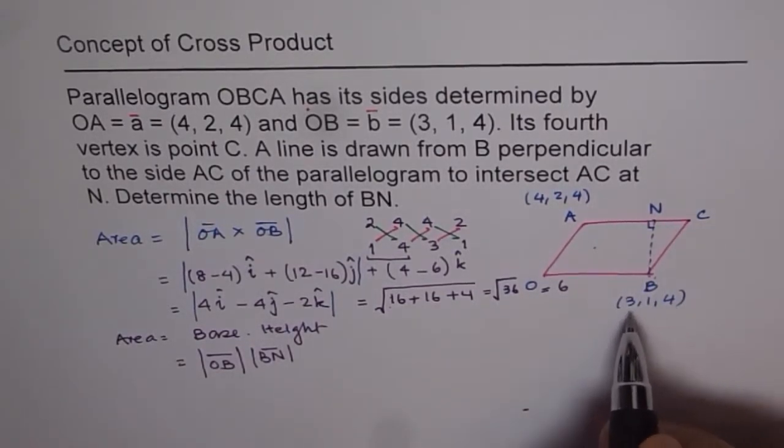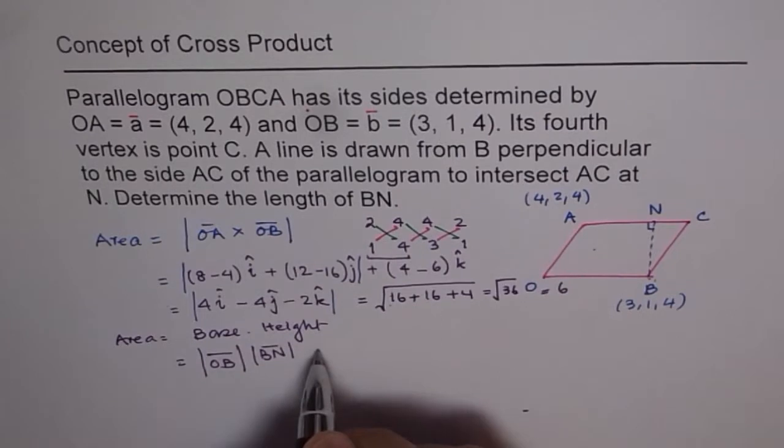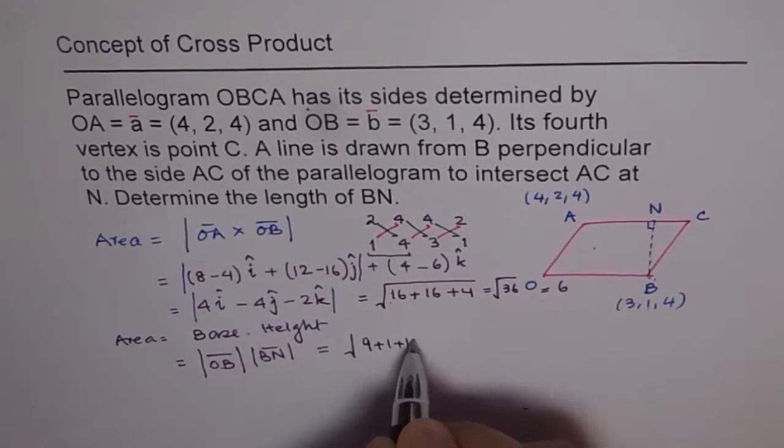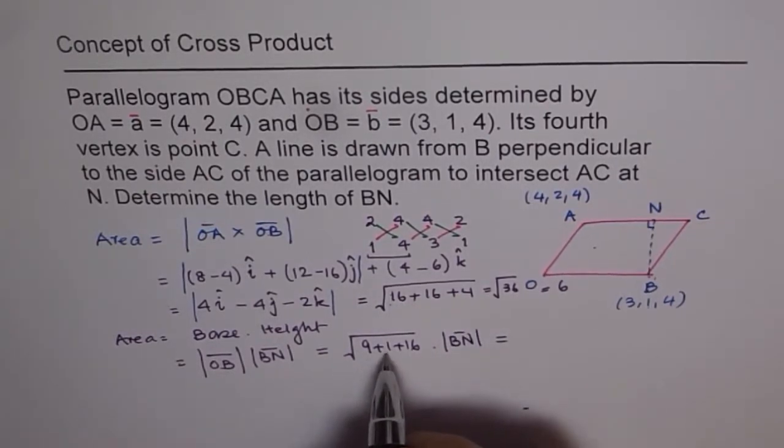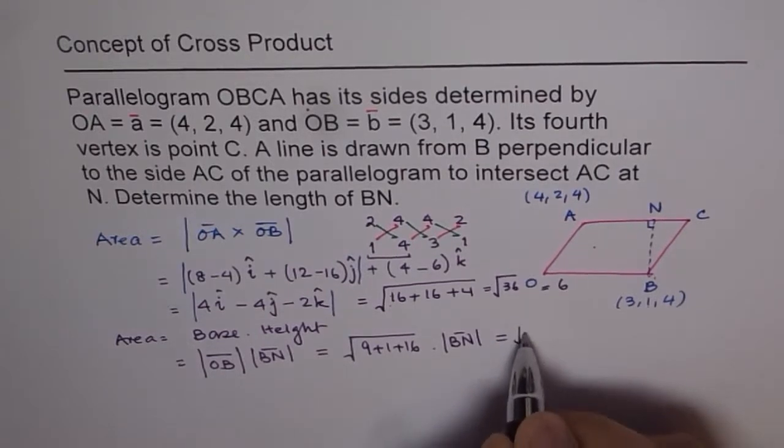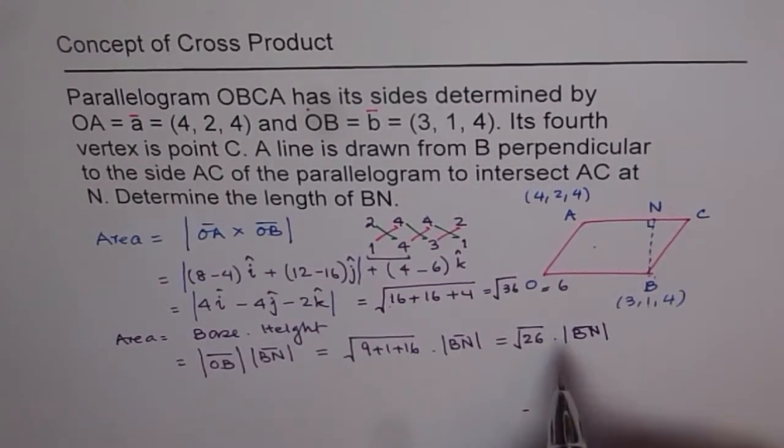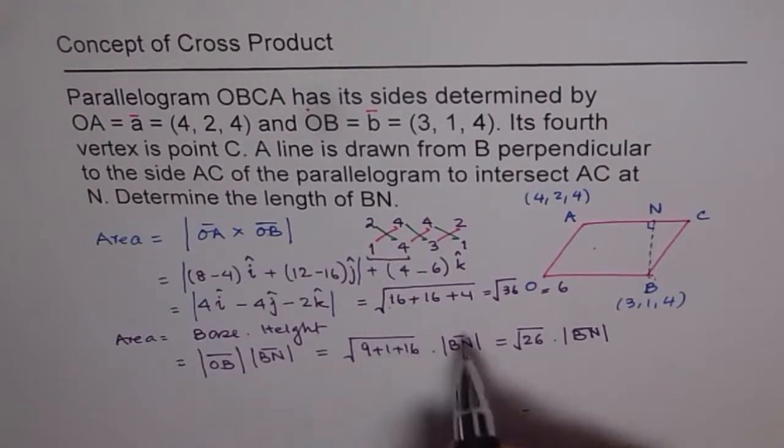Now, what is OB? OB is (3, 1, 4). So the magnitude of (3, 1, 4) is square root. So magnitude of OB is equal to square root of 3 square plus 1 square plus 4 square. That is 9 plus 1 plus 16, times magnitude of BN. Which is 3 plus 1, 10. 10 plus 16 is 26. So square root of 26 times magnitude of BN. Now, so this is the area when we calculate it by base times height. And we have already calculated area, which is 6. Now we can equate both the areas. They should be same.